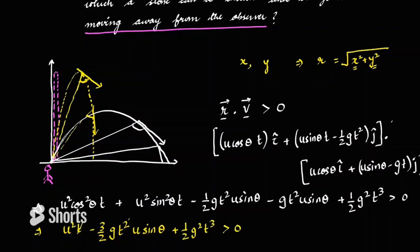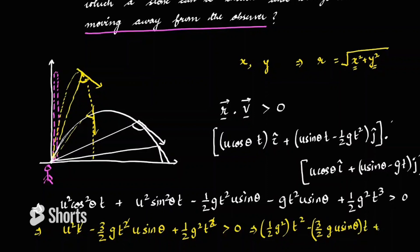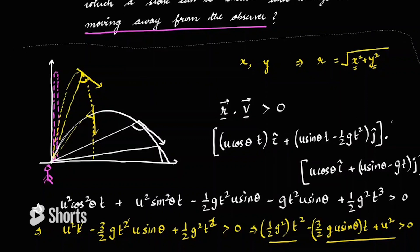Now, for this quadratic expression to always be greater than zero, meaning the particle is always moving away from the observer for all t > 0, the roots of this quadratic must not be real. That is a very important concept: if a quadratic expression is always greater than zero, then the roots are not real, which means the discriminant is less than zero.